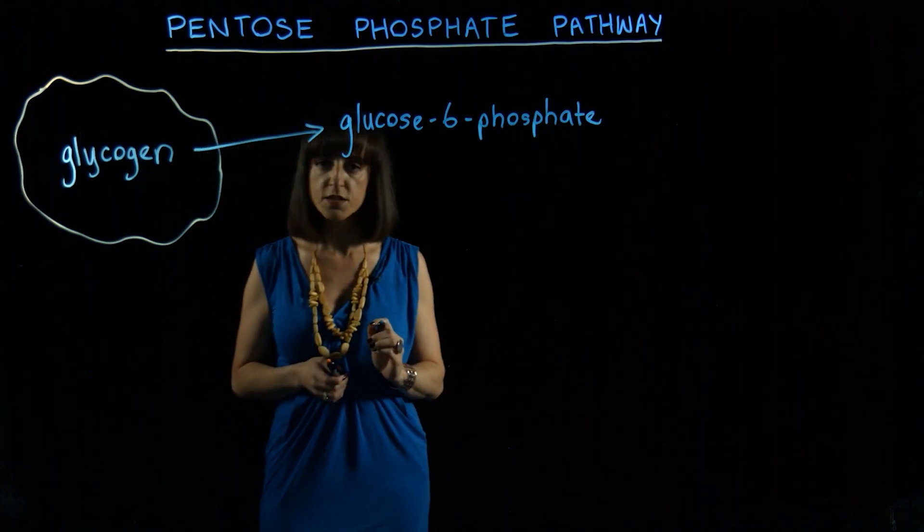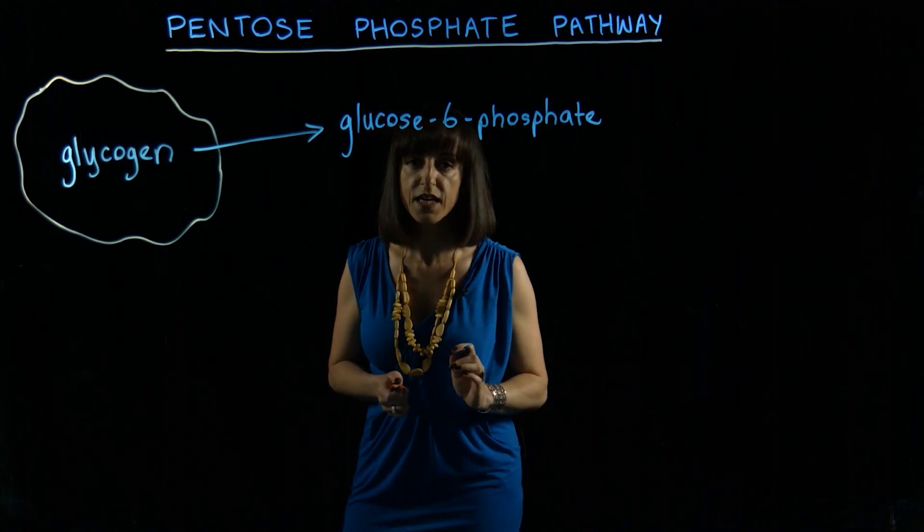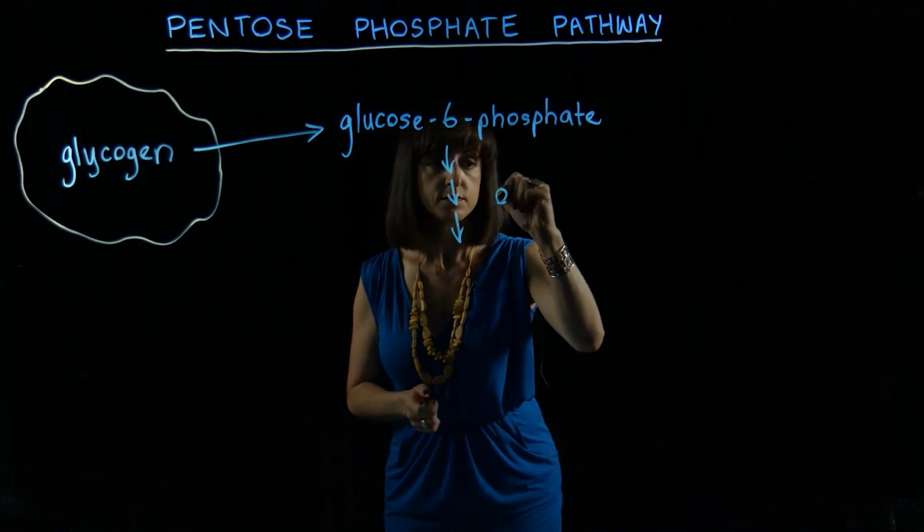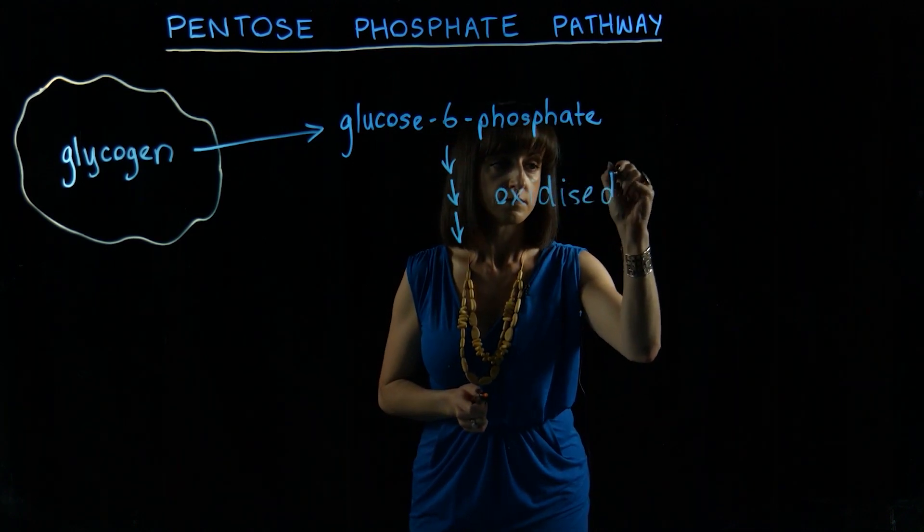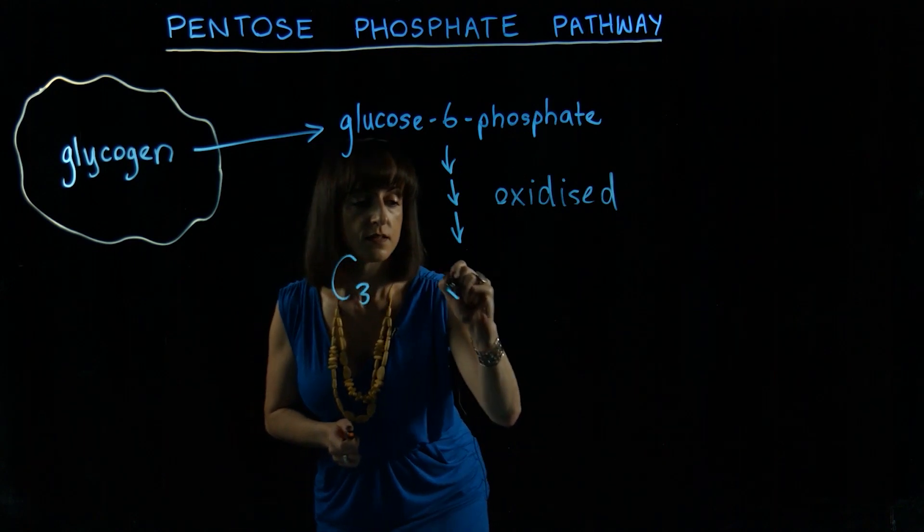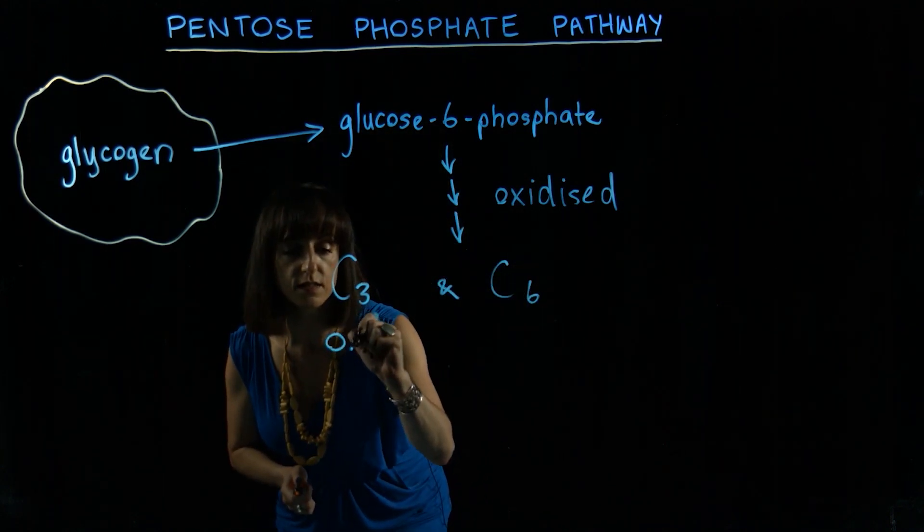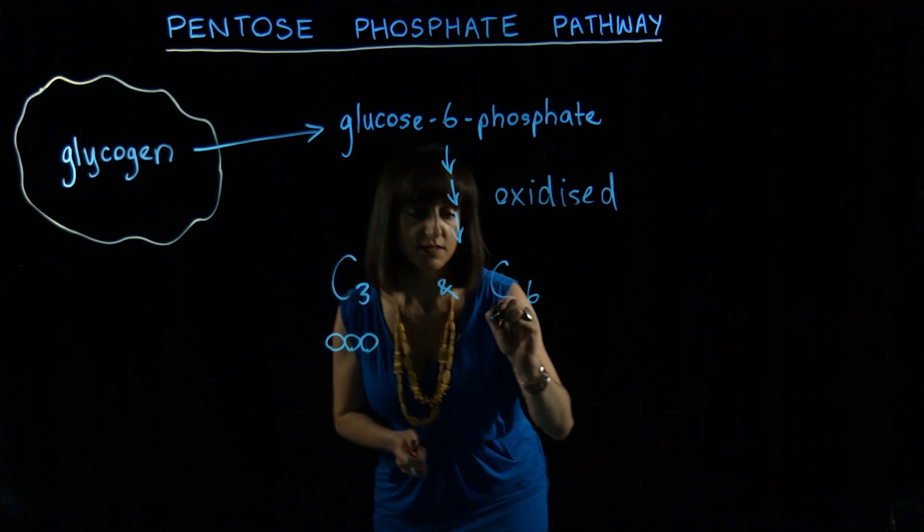In the pentose phosphate pathway, glucose 6 phosphate is ultimately oxidized to 3 and 6 carbon intermediates of glycolysis.